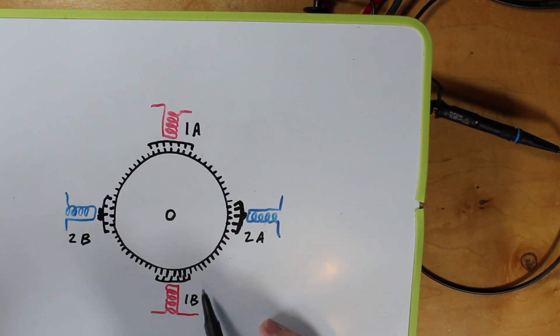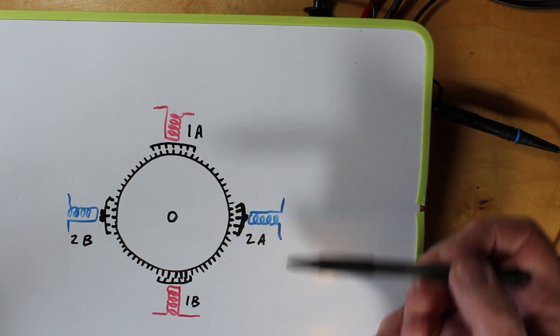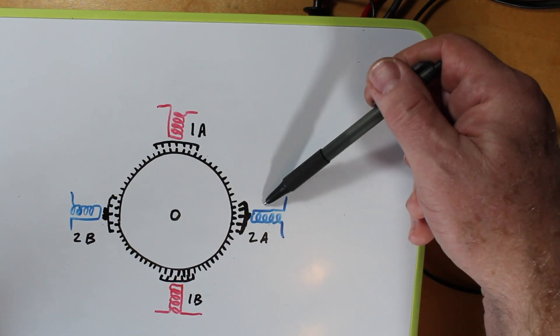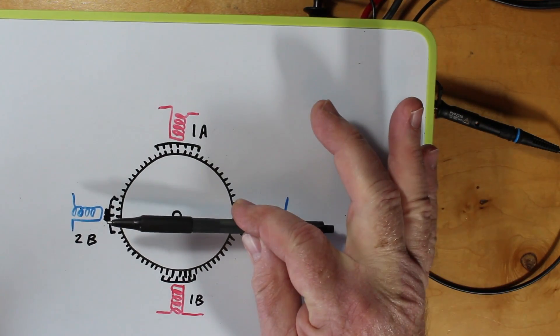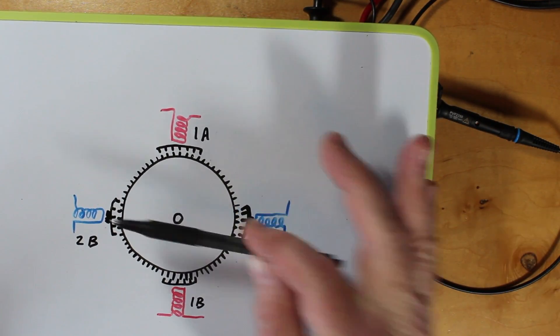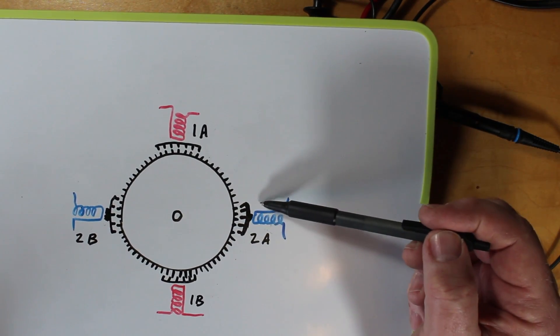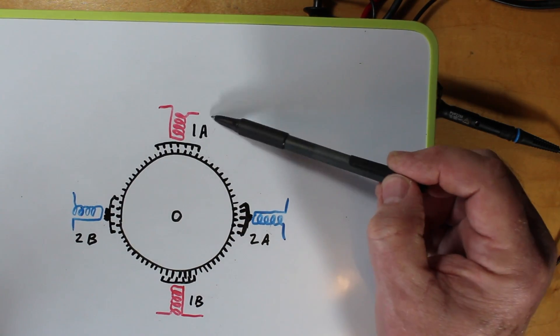You'll notice that 1B is half a tooth off and over here we have 2A and 2B. 2B compared to 2A is also half a tooth off, but this whole assembly here is shifted a quarter of a tooth and that gives us this guy is in line. This is off by a quarter tooth, half a tooth, three quarters of a tooth and of course this one's in line.